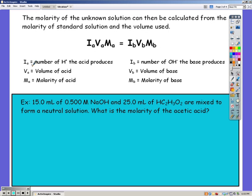Ia being the number of hydrogen ions that the acid produces. If you had phosphoric acid, it would have an Ia of 3 because there's 3 hydrogen ions that that would produce.